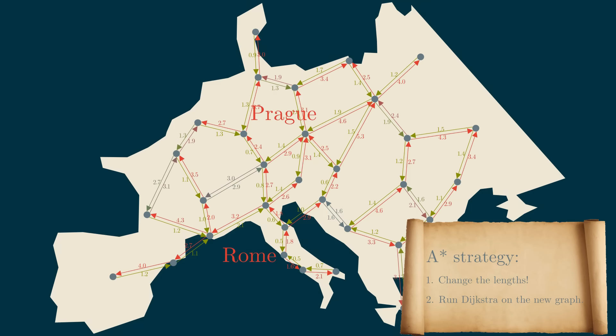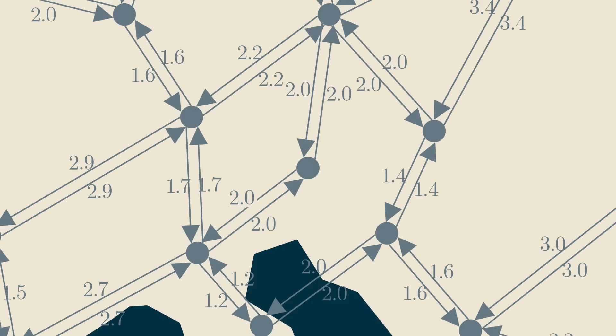But how should we change the edge lengths? There's an obvious problem. If we, for example, just pick some edge and make it shorter, maybe the shortest path with original lengths was this one, but after the change, this one becomes shorter. This means that our algorithm will return the wrong path.